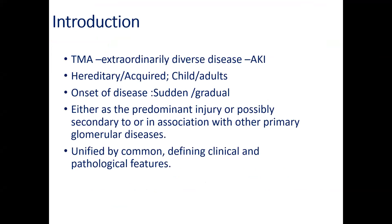TMA is an extremely diverse disease. It can occur in different clinical settings, but the most common renal manifestation of whatever condition may be is acute injury. TMA can be hereditary or acquired due to other causes, and it can occur in children and adults. The onset of disease can be sudden or gradual. It occurs either as a predominant injury in the kidney or possibly secondary to other primary global diseases like lupus nephritis. Whatever may be the cause, TMA is unified by common defining clinical and pathological features.